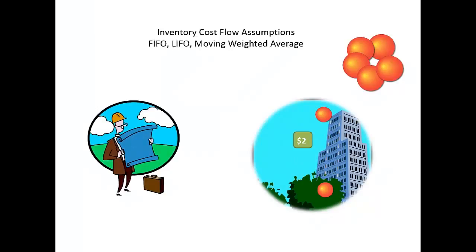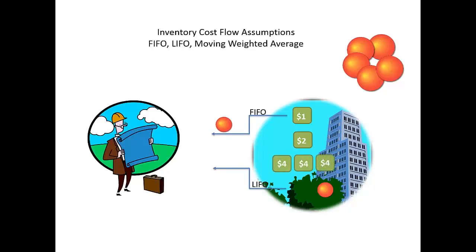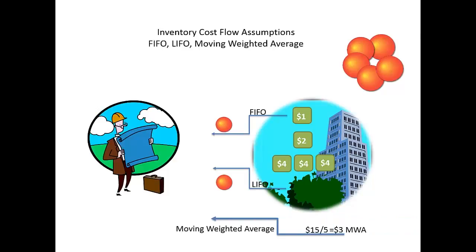Management will assume which unit cost was sold by using one of three cost flow assumptions. FIFO assumes the first unit cost in of $1 was the first unit cost to be expensed out – $1. LIFO assumes the last unit cost in of $4 was the first unit cost to be expensed out – $4. Moving Weighted Average doesn't try to assume which unit cost went out first; it simply expenses an average unit cost, computed as $15 total cost divided by five units on hand just before the sale, which equals a $3 moving weighted average cost per unit.